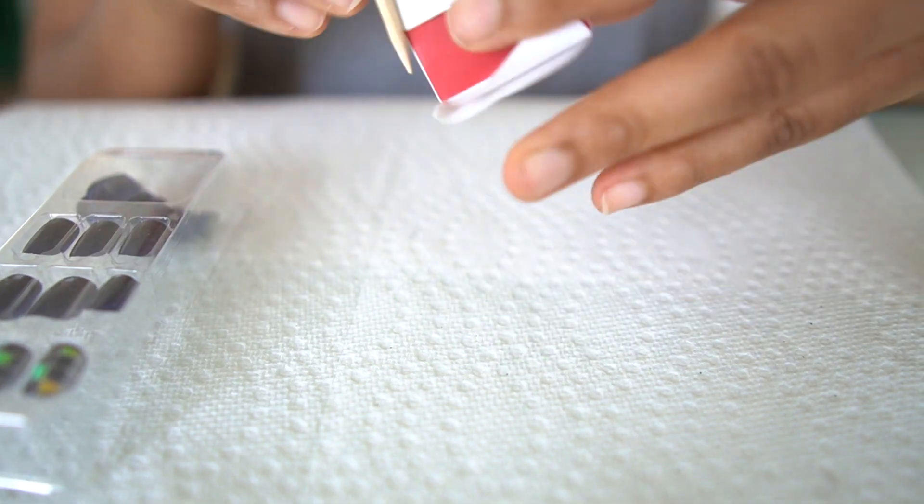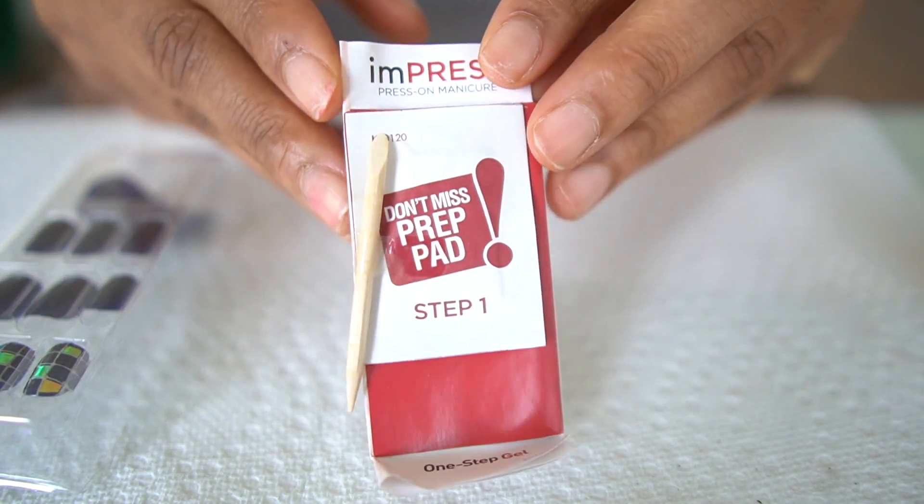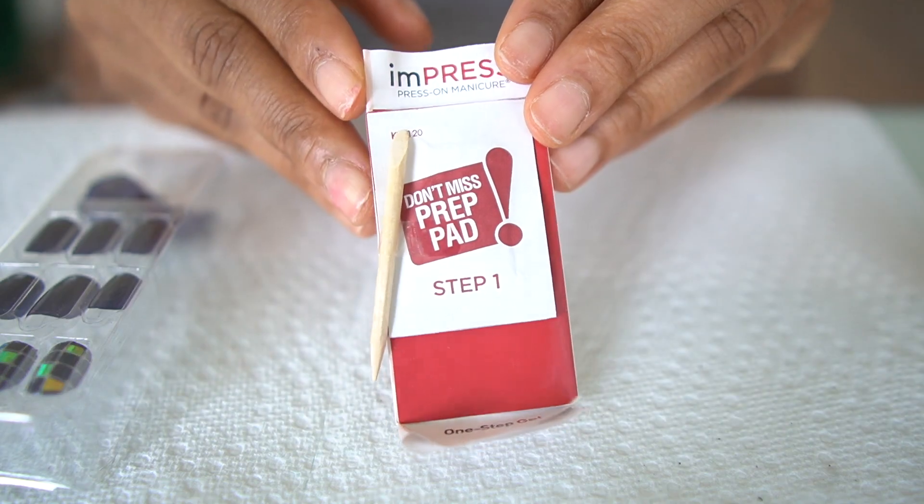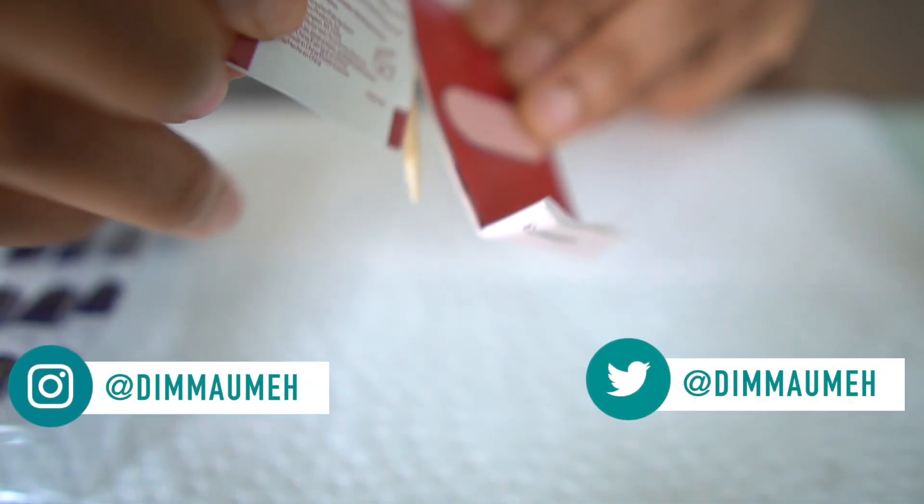The ones that come with nail adhesive tabs underneath. They don't come with glue, you don't need glue for this. It comes with a mini pack that comes with just essentials and an alcohol pad.